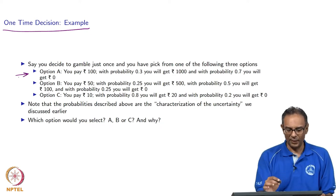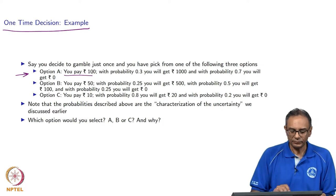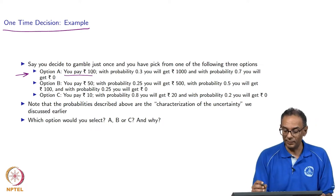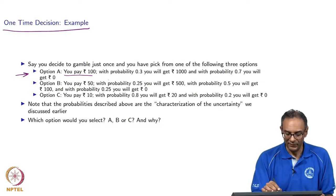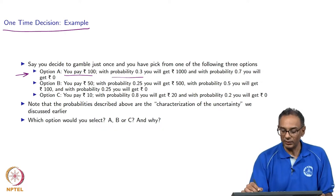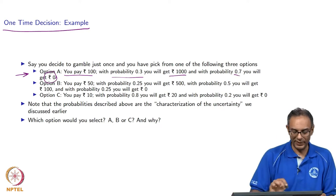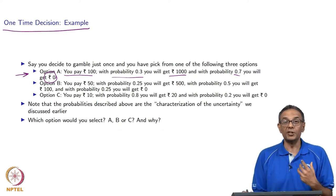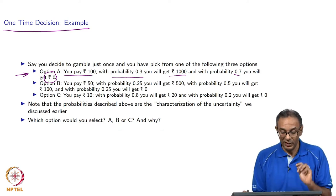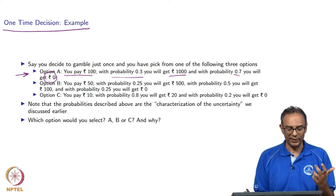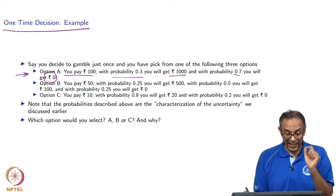There are three options. In Option A, you pay 100 rupees to play this game. With probability 0.3 you will get 1000 rupees, and with probability 0.7 you will get 0 rupees. That means you will lose 100 rupees with probability 0.7, or gain 900 rupees with probability 0.3.